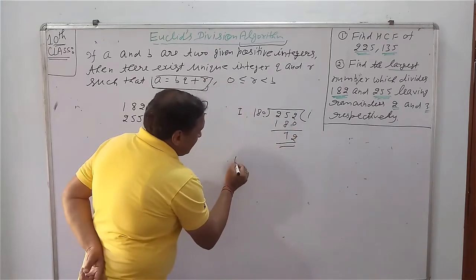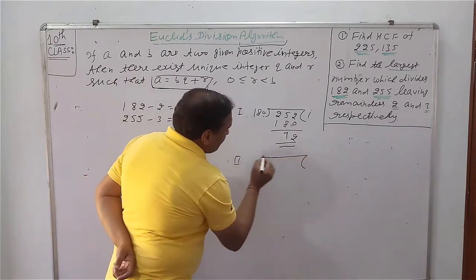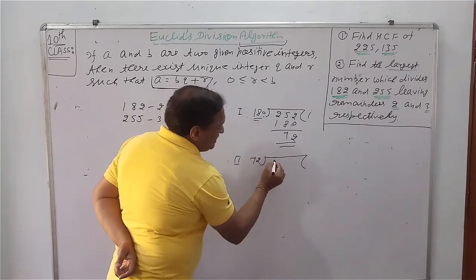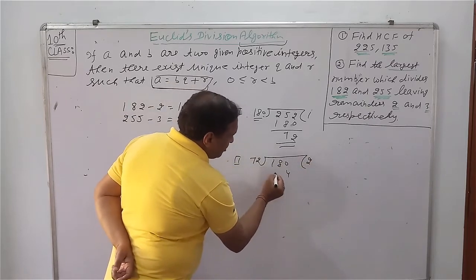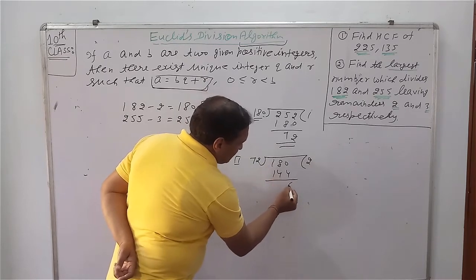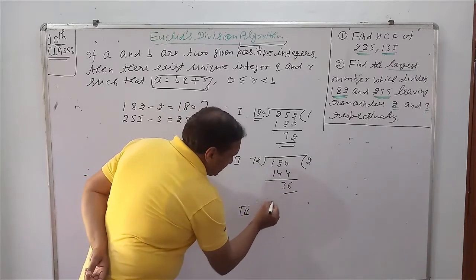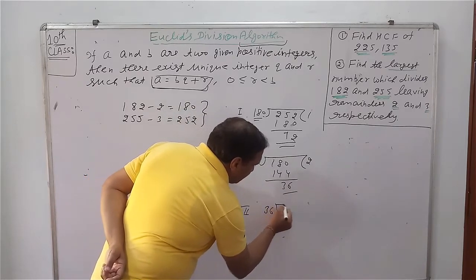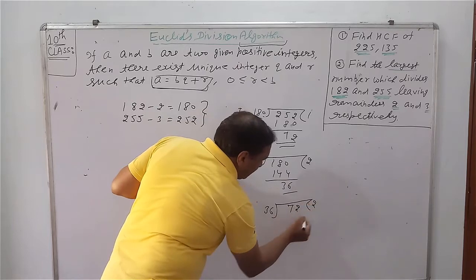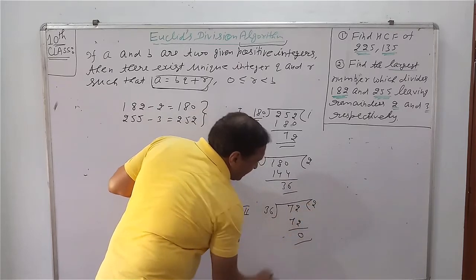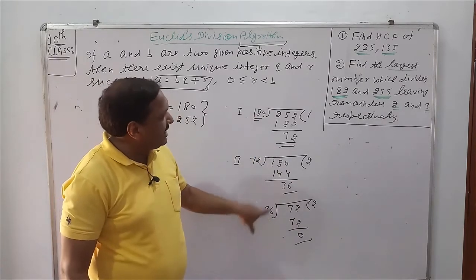In second step, now we will take 72 as a divisor and 180 as our new dividend. 2. In third step, again we will take 36 as a new divisor and 72 as new dividend. 36 into 72, so remainder is 0.